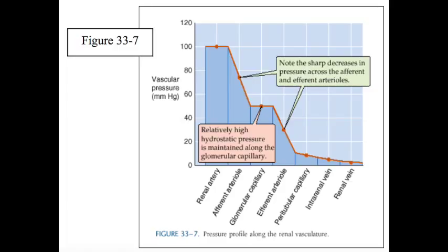Or, in response to angiotensin 2, both afferent and efferent resistances increase. Thus, renal plasma flow decreases. The opposing effects on glomerular filtration rate of increasing both afferent resistance and efferent resistance explains why the combination of both keeps glomerular filtration rate fairly constant despite a decline in renal plasma flow.